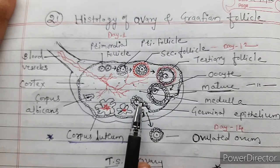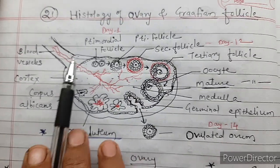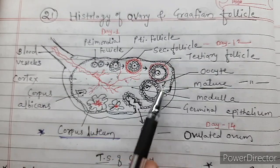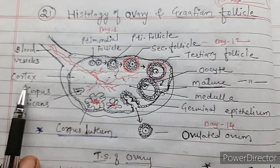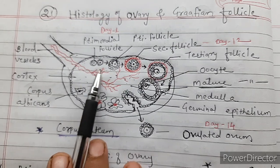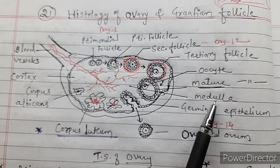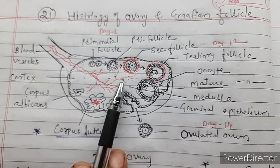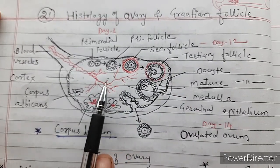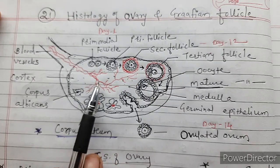In the last period I told you that the outer region or outer part of the ovary is called as cortex, and the central part of the ovary is called as medulla. The medulla is in the centre and it contains stroma, blood vessels, and lymph vessels.